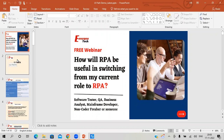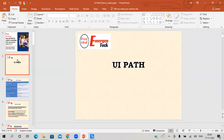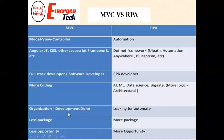We'll start with UiPath, but before that I want to explain this slide to everyone. This slide explains the difference between legacy technologies versus RPA. Legacy technologies are called MVC — Model View Controller — which covers scripting languages like JavaScript, C# script, and front-end/back-end integration.